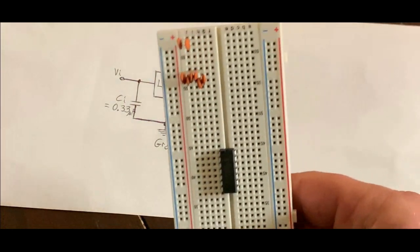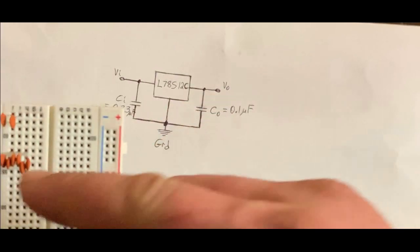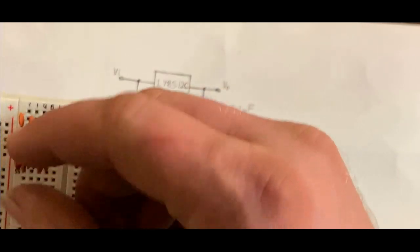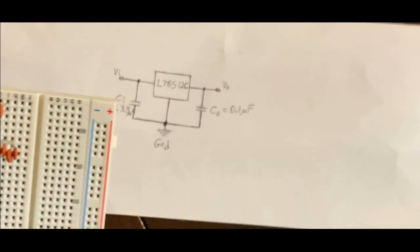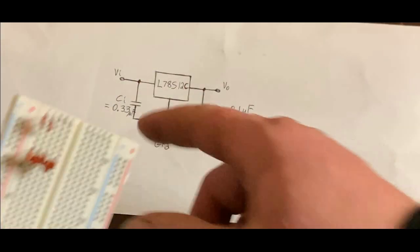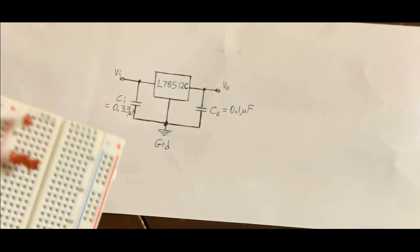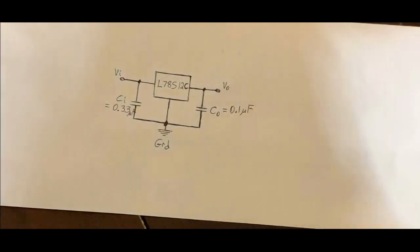And on this board I removed everything except for the capacitors and the IC. So you can see I have these lined up in parallel to make a 0.33 microfarad, and these two are added together to make a 0.1 microfarad. That just makes it easier because I don't have that exact value.